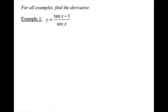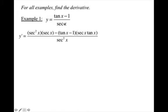Now we're going to use our derivative rules with the trig function rules. For example 1, we're going to find the derivative of the function tangent x minus 1 all over secant x. In order to find this derivative, you need to use the quotient rule. After using the quotient rule: the derivative of tangent is secant squared x, the derivative of negative 1 is 0, times the bottom, minus the top times the derivative of the bottom — the derivative of secant is secant times tangent — all over the bottom squared.